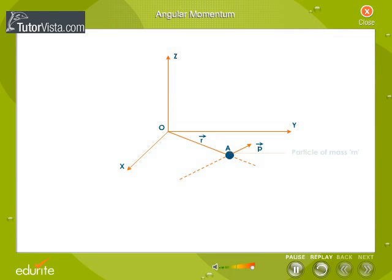Figure shows a particle of mass m with linear momentum, vector p, as it passes through point A in the xy-plane.